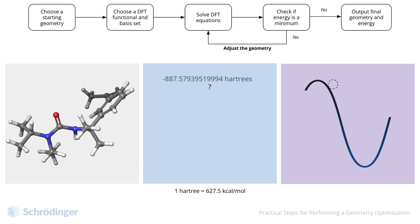The loop starts again. Jaguar solves the DFT equations, which generates a new energy value. This energy is lower than the original energy, we are making progress. The ball moves down the curve. We check again for a minimum, and again we don't meet the criteria, so we adjust the geometry.